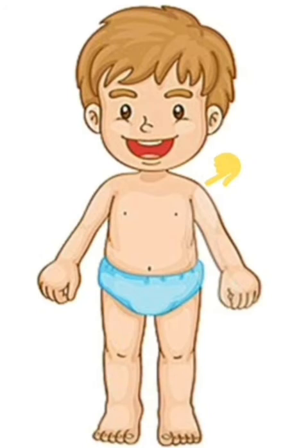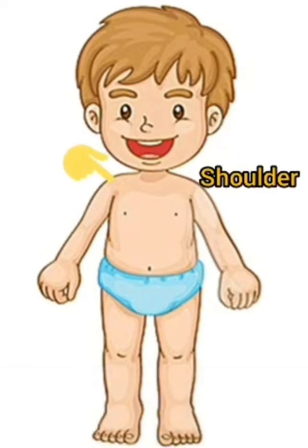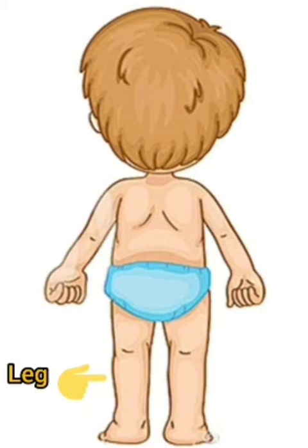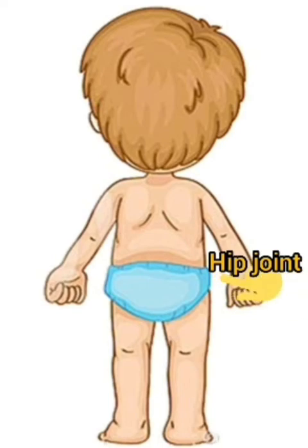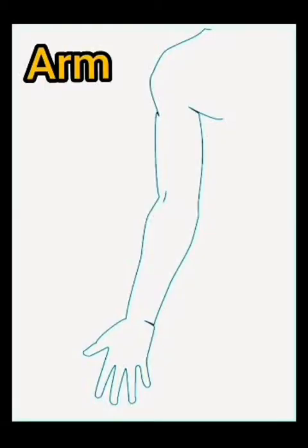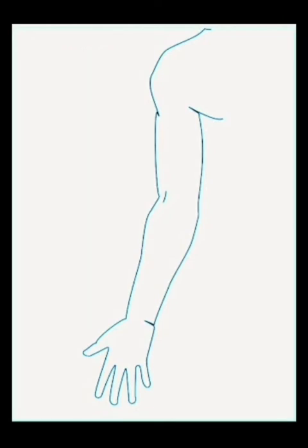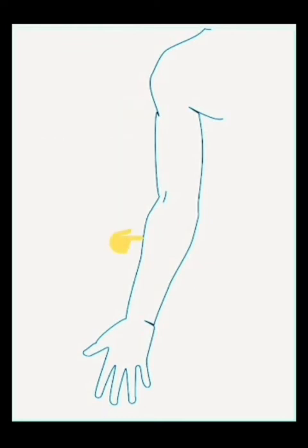The part where the arm is joined to the torso is called the shoulder. The leg is joined to the torso at the hip joint. The arm has three parts: upper arm, forearm and hand.